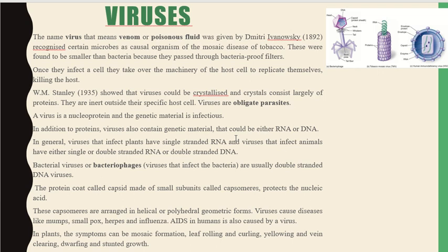Viruses that infect animals can have single- or double-stranded RNA or DNA. Bacteriophages, which are viruses that infect bacteria, are usually double-stranded DNA viruses. The protein coat called the capsid is made up of small subunits called capsomeres that protect the nucleic acid. These capsomeres are arranged in helical or polyhedral geometric forms.